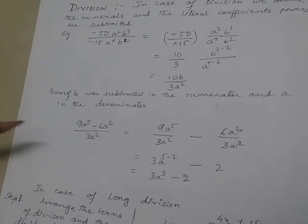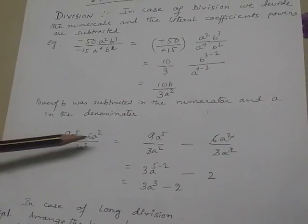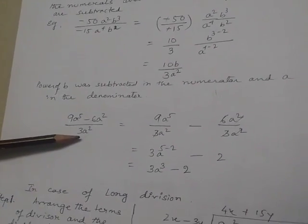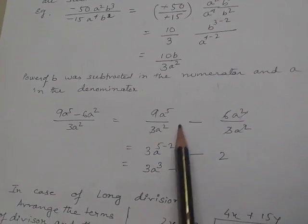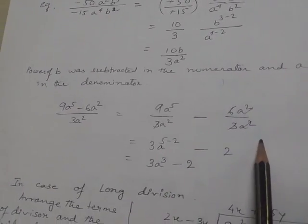Now see if 9a⁵ - 6a² is divided by 3a². I have to divide both terms separately: 9a⁵ by 3a² minus 6a² by 3a².